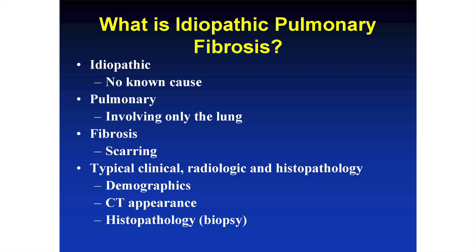Idiopathic pulmonary fibrosis has typical clinical, radiologic, and histopathologic characteristics. The demographics — the patient groups in which it occurs — are different from scleroderma. These are usually much older patients, in their 60s, 70s, and 80s, and it occurs much more in males. It has a typical CT appearance which is different from most CTs in patients with scleroderma-associated interstitial lung disease, and it is often diagnosed on histopathology or biopsy.